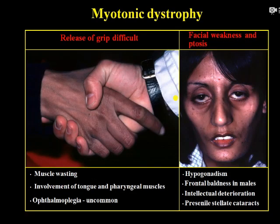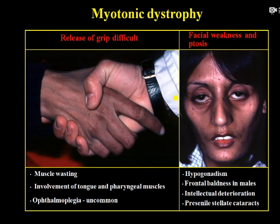In myotonic dystrophy, ptosis will be one of the prominent features, but the diagnosis is mainly based on other features: facial weakness, an expressionless face, and muscle wasting. Sometimes involvement of the tongue and pharyngeal muscles may also be present. These cases should be referred to a physician to rule out any systemic abnormality.